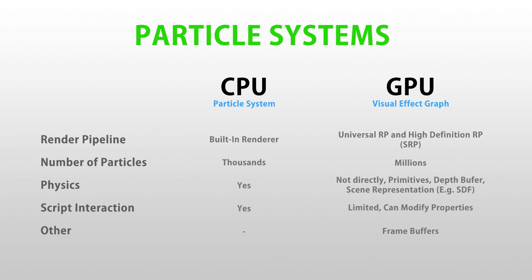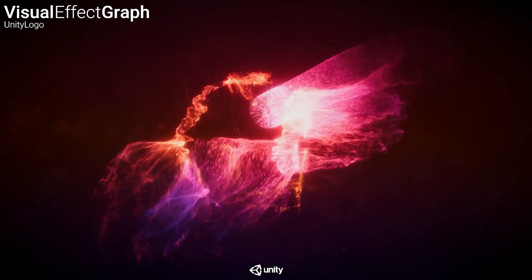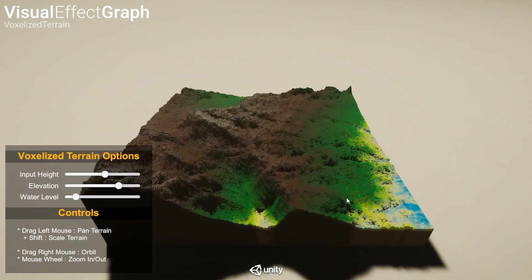So you can see how each has its pros and cons. If you want millions of particles, use the visual effects graph. And if you want easy interaction with the physics world, then you should use the built-in particle system. Now that we've seen a bunch of pros and cons, let's try playing around with it. If you're already familiar with using the shader graph, then you'll very easily pick up the visual effects graph.